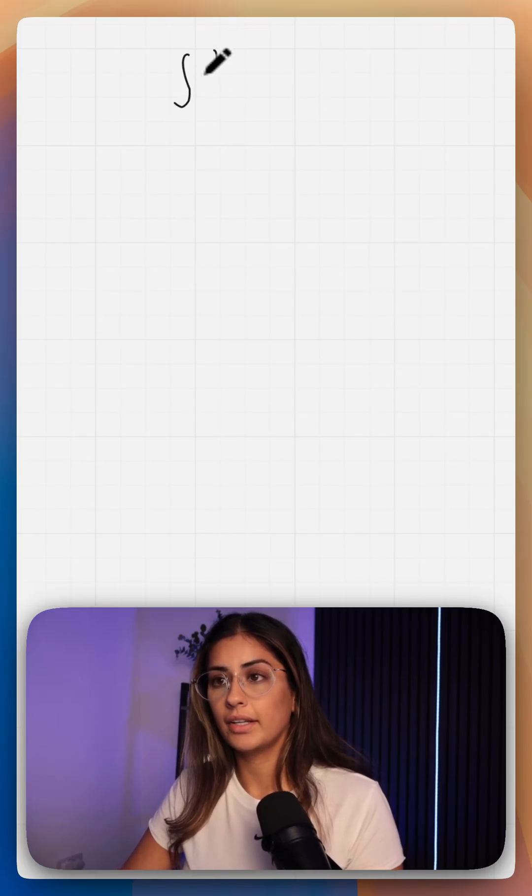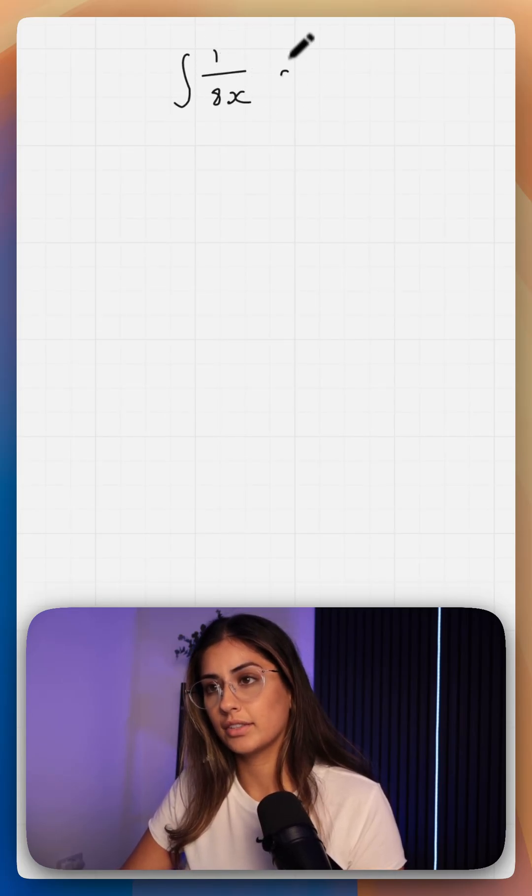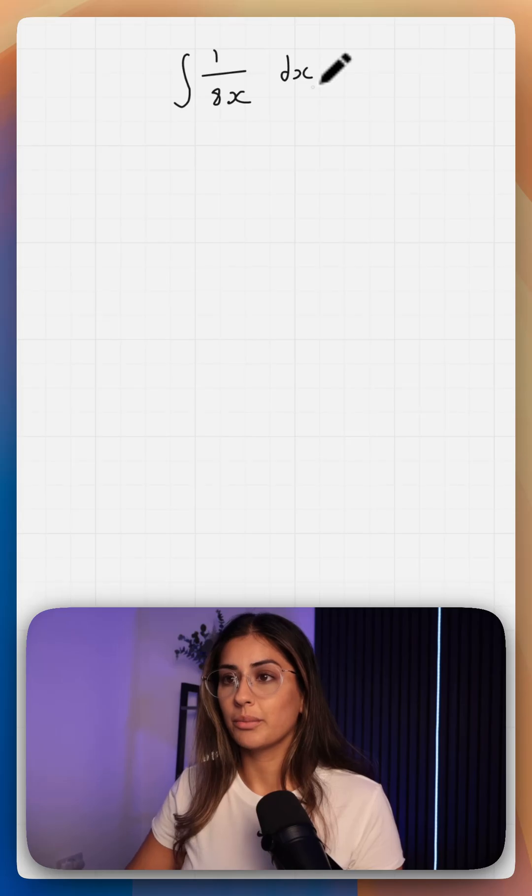What is the correct way to integrate 1 over 8x, for example? There are two ways you can approach this.